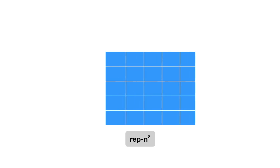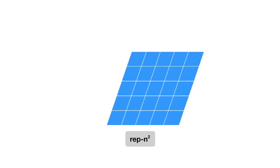Since stretching and skewing the square don't change this property, we can make a more general claim. All parallelograms, rectangles, and squares are rep n-squared tiles.